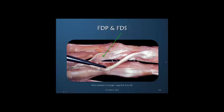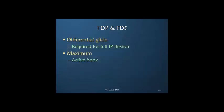The profundus and superficialis must glide differentially because they have different links, but following trauma it is difficult to maintain this independent excursion. Differential glide is required whenever there is full interphalangeal joint flexion, and the differential glide within zone 2 has nothing to do with the position of the metacarpophalangeal joint. Because differential glide results from interphalangeal joint flexion, bringing the MP joint into extension produces maximum differential glide. So maximum differential glide between the FDP and FDS occurs in the active hook position.